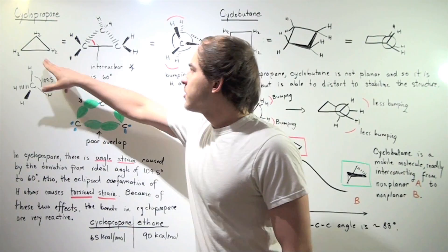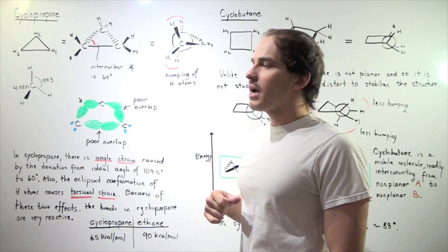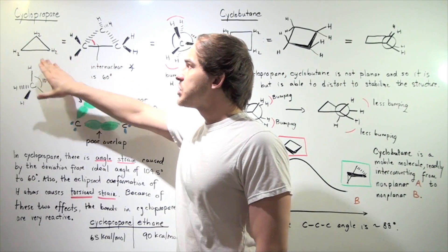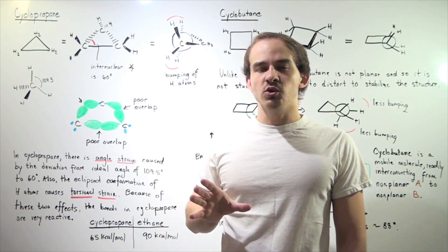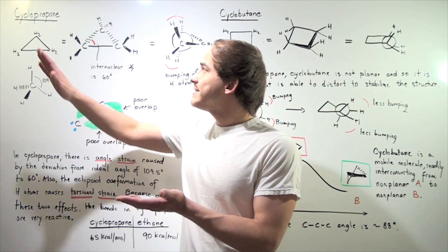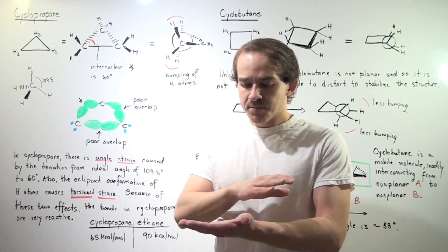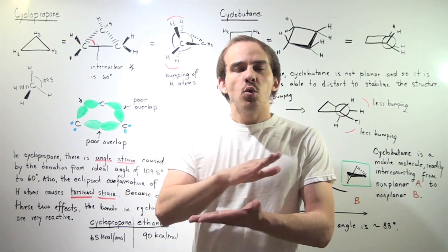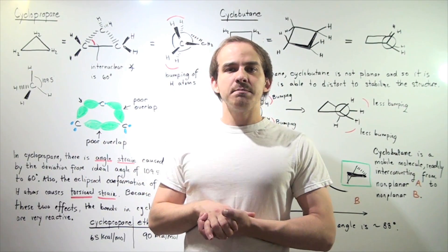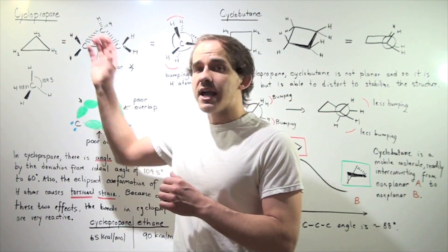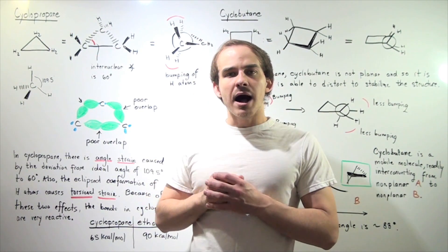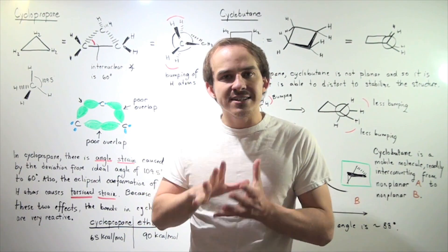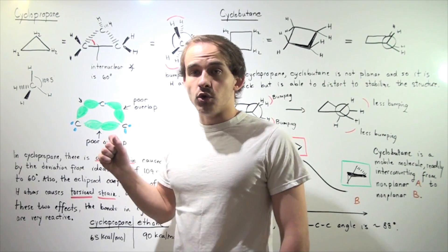Here we have three different depictions of cyclopropane. In the first depiction, cyclopropane is a planar molecule, meaning if we place it on the XY plane, all the carbon-carbon bonds will lie on that same XY plane. Cyclopropane is also a static molecule — it doesn't change conformation and exists strictly as a planar molecule.